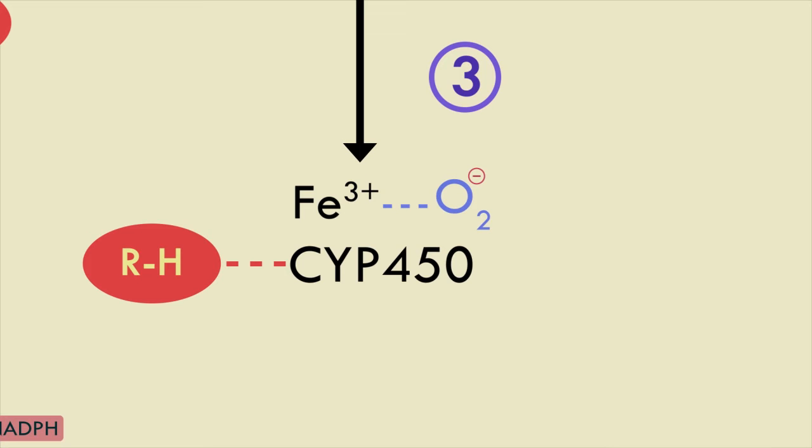So the iron in the cytochrome P450 has been oxidized, it has lost an electron, whereas the oxygen has been reduced, it has gained an electron.